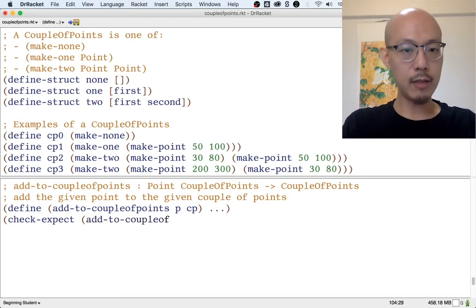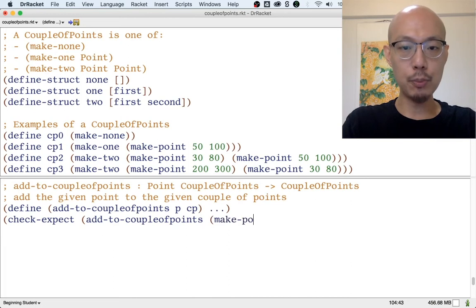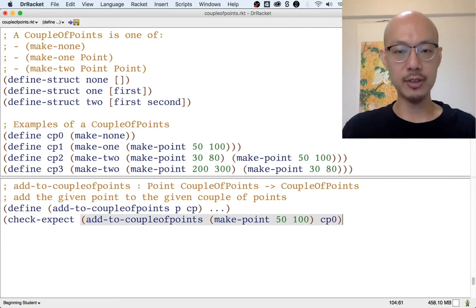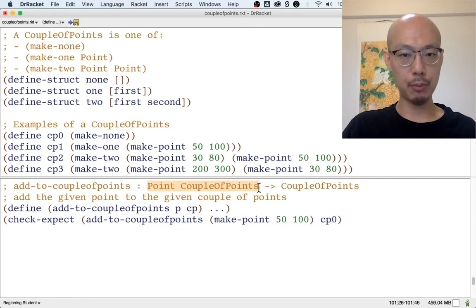For example, what if addToCoupleOfPoints were to be given a new point, let's say it's 5100, and we need to add it to CP0. So remember, addToCoupleOfPoints takes two inputs, a point and a couple of points. So in each example for the function, we need to give an example point and an example couple points. So let's say this is an example point, that's a new point, and then this is the couple of points we had before, maybe on the screen in the Big Bang.